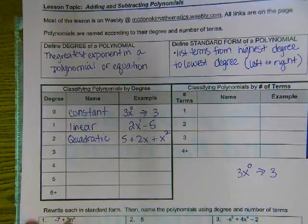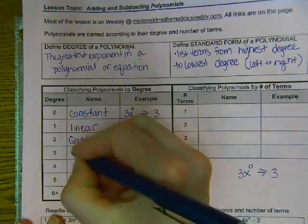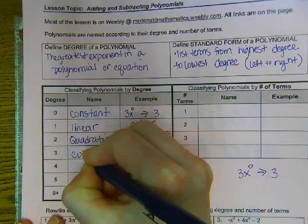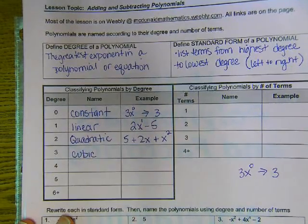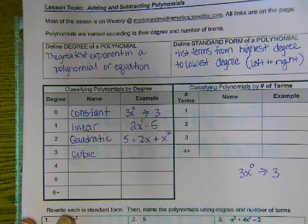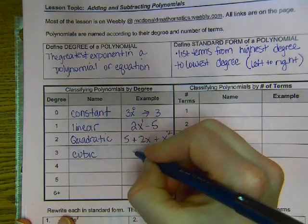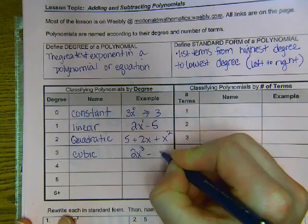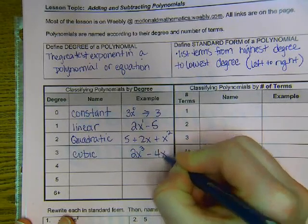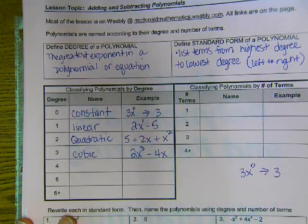If something has a highest degree three, we say it is cubic. So maybe 2x to the third minus 4x. That would be something that's cubic.